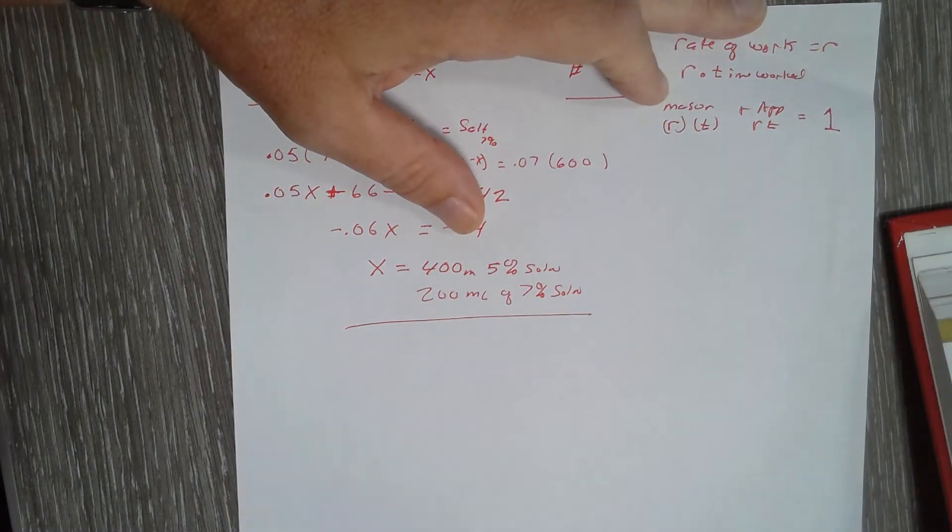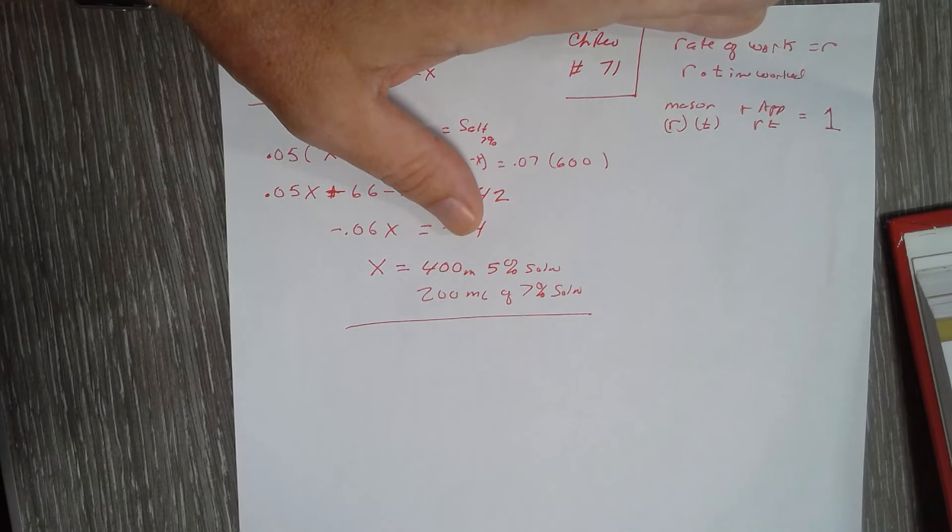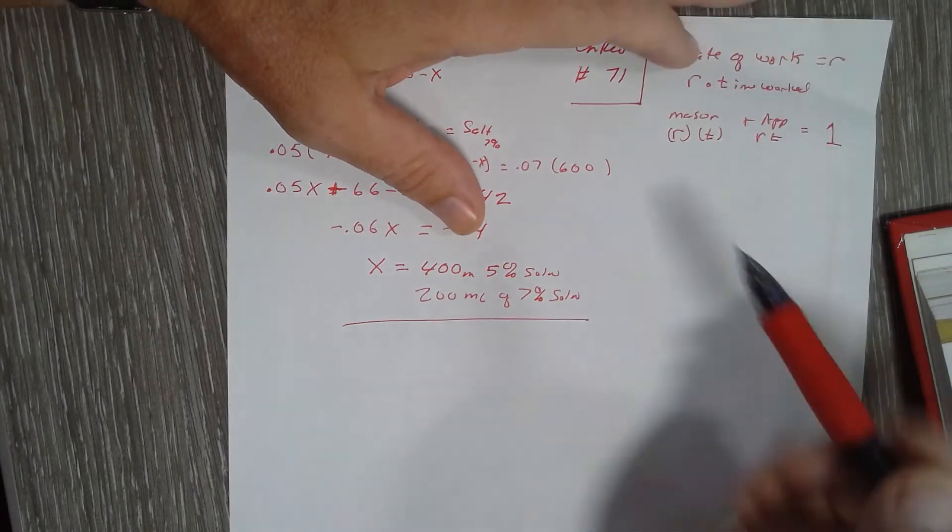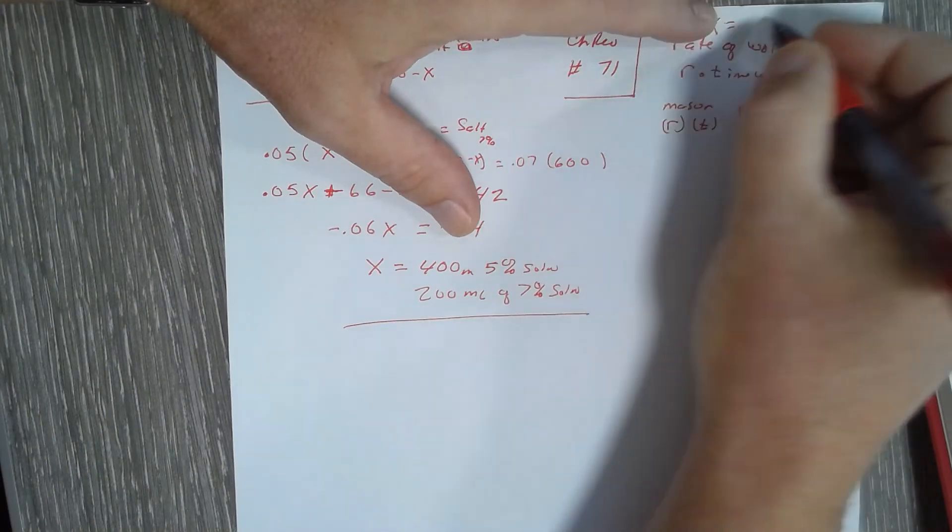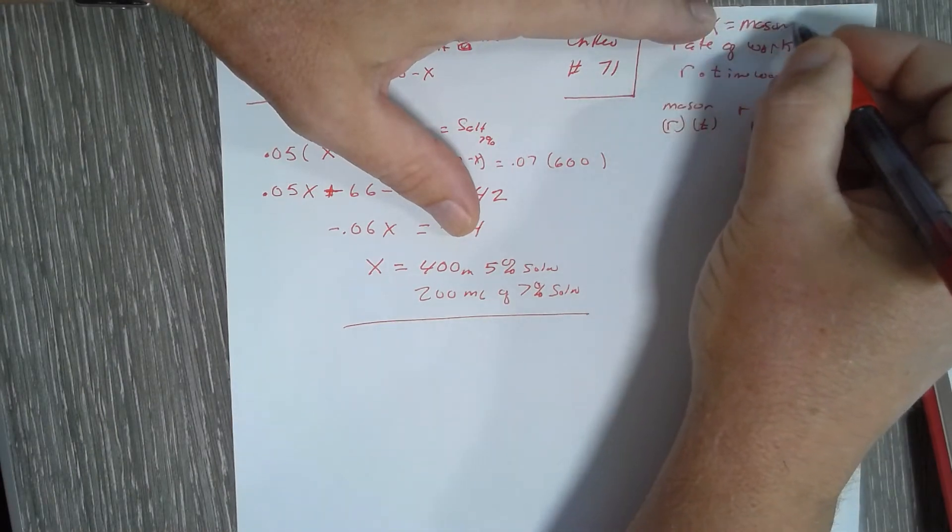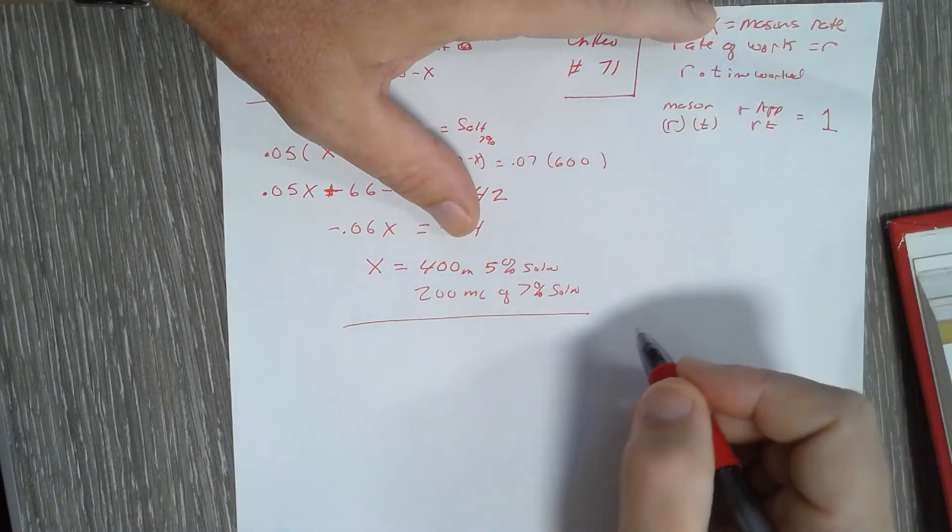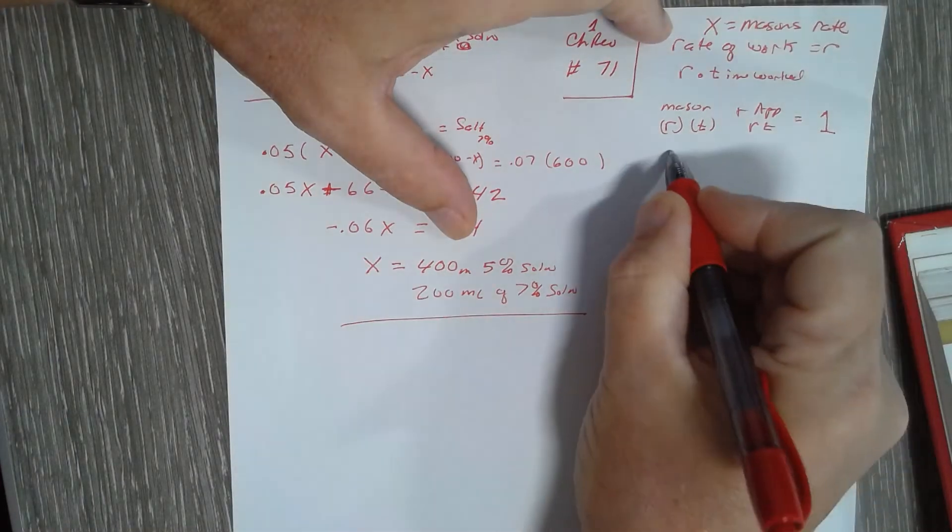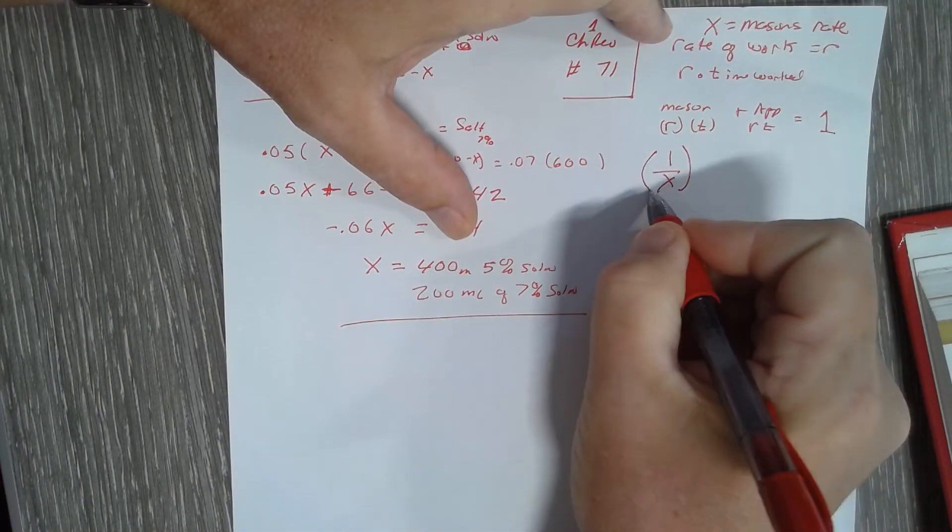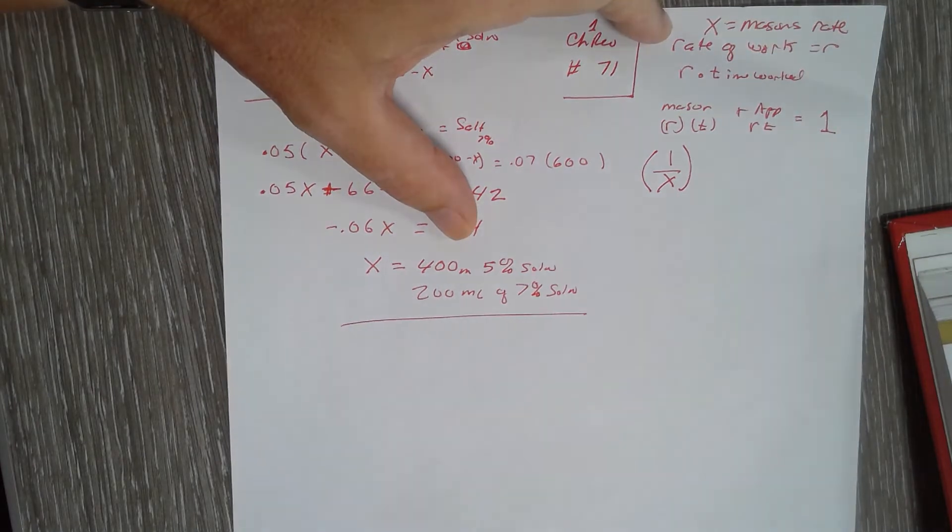Now the rate, what they tell us in 71, is they say a mason can build it in nine hours less than an apprentice. So I'm going to let x equal the mason's rate. So his rate of work is one over x. Does that make sense? If I can do a job in three hours I get one-third of the job done every hour, so my rate of work is one-third. If you can do a job in seven hours, your rate of work is one-seventh.